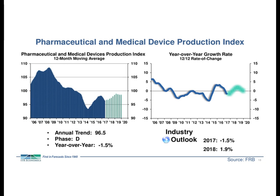Here we have U.S. pharmaceutical and medical device production, down 1.5% year over year and in a Phase B recessionary trend right now. But there has been some lateral movement — we don't expect to see much more decline in that 12-12, and are expecting a transition to Phase A recovery in the second half of 2017. However, we do expect to finish the year down 1.5% before accelerating up to not quite 2% in 2018.